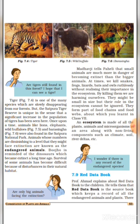An ecosystem is made of all the plants, animals, and microorganisms in an area along with non-living components such as climate, soil, river, deltas, etc.